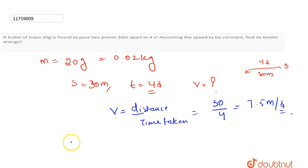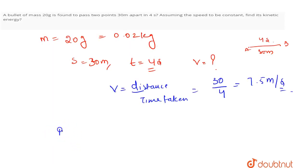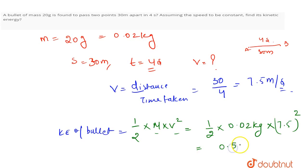The second thing we have to calculate is kinetic energy of the bullet. We calculate kinetic energy using the formula with mass and velocity. The mass is 0.02 kg. The velocity is 7.5 meter per second. We will solve this. This will be 0.5625 joules.